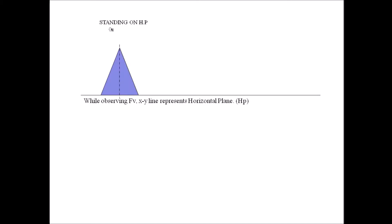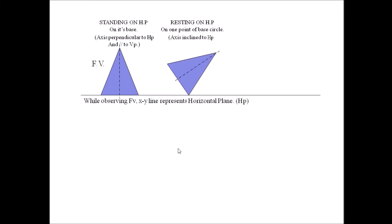Whenever we observe some statements in the problem, based on that, we draw the diagram. If the statement comes like 'standing on HP,' it may be a base — in that case, the axis is perpendicular to HP and parallel to VP. If a statement comes like 'resting on HP,' it can be one point of the base circle of a cylinder or cone, or it may be a corner of a prism or pyramid, or it can be one base edge of a prism or pyramid resting on HP.